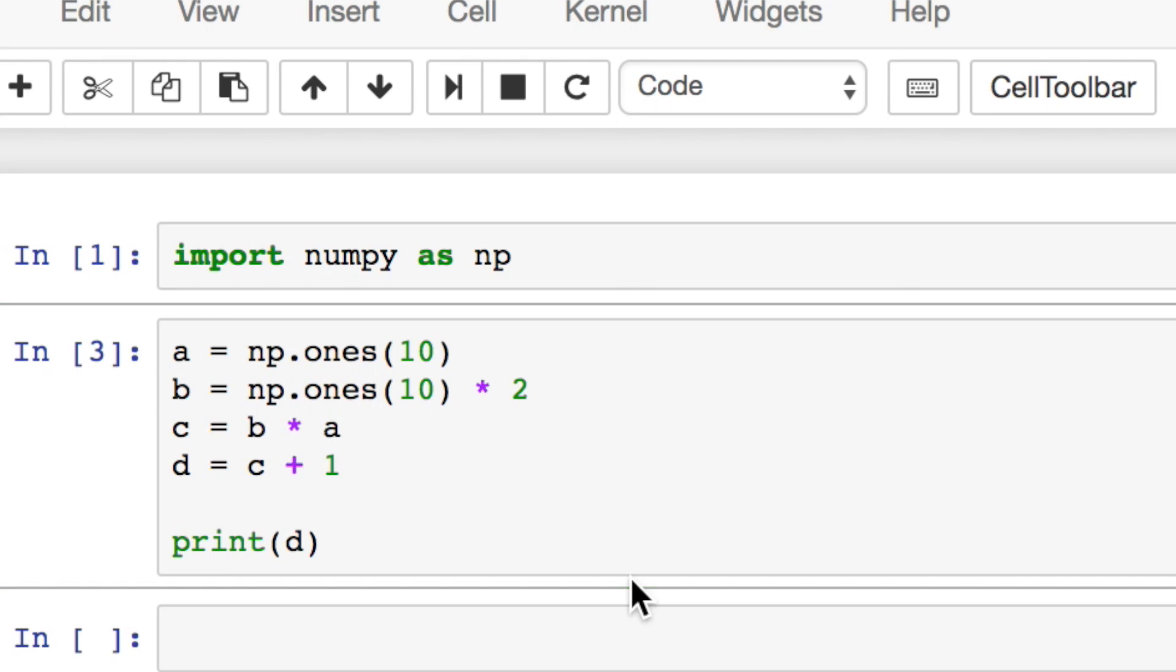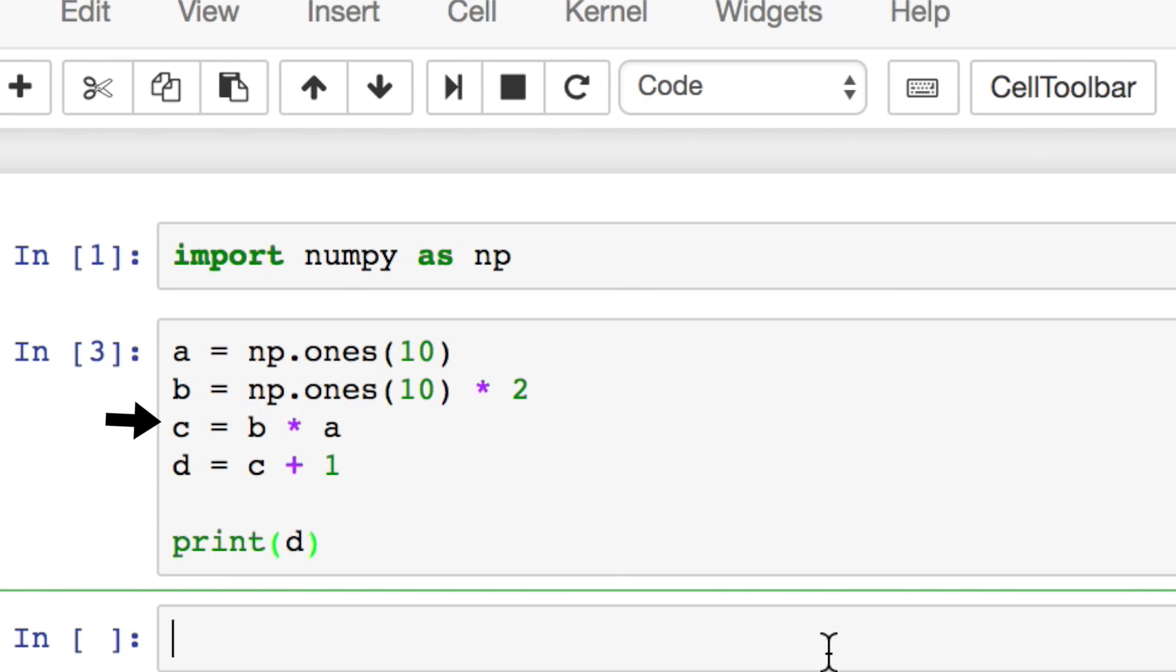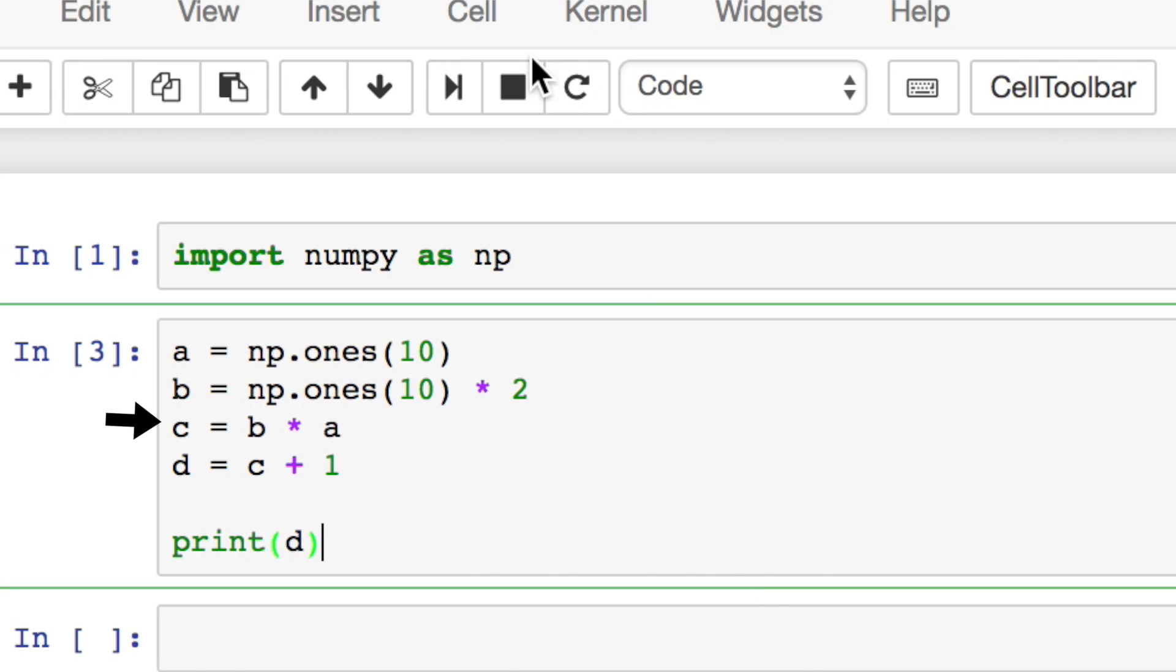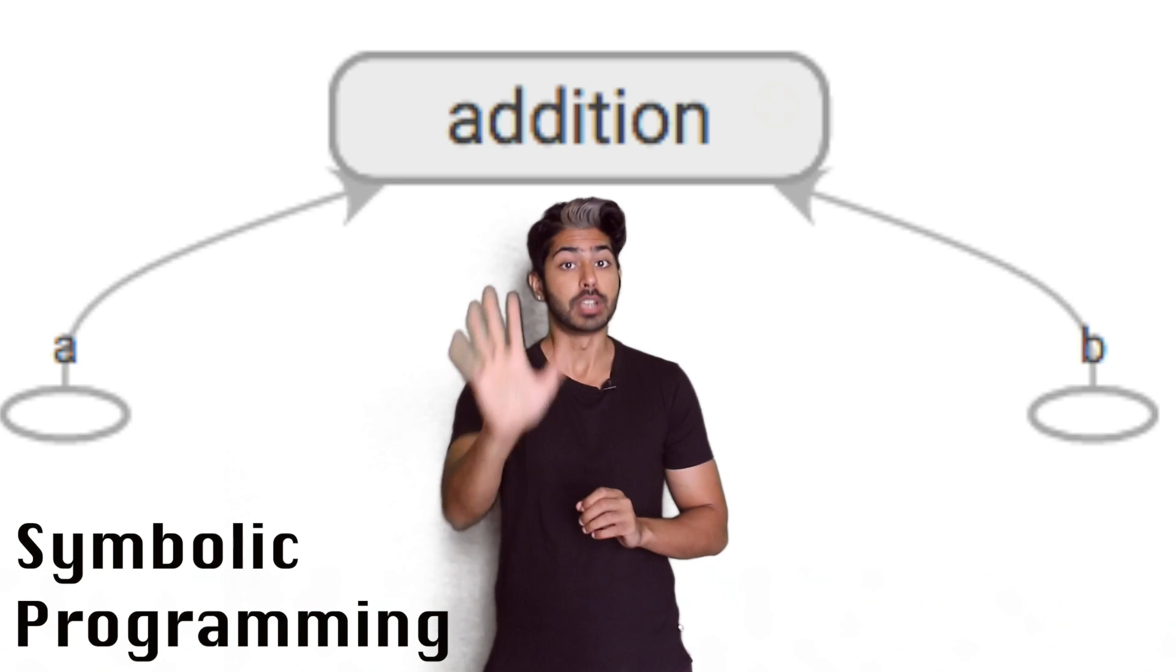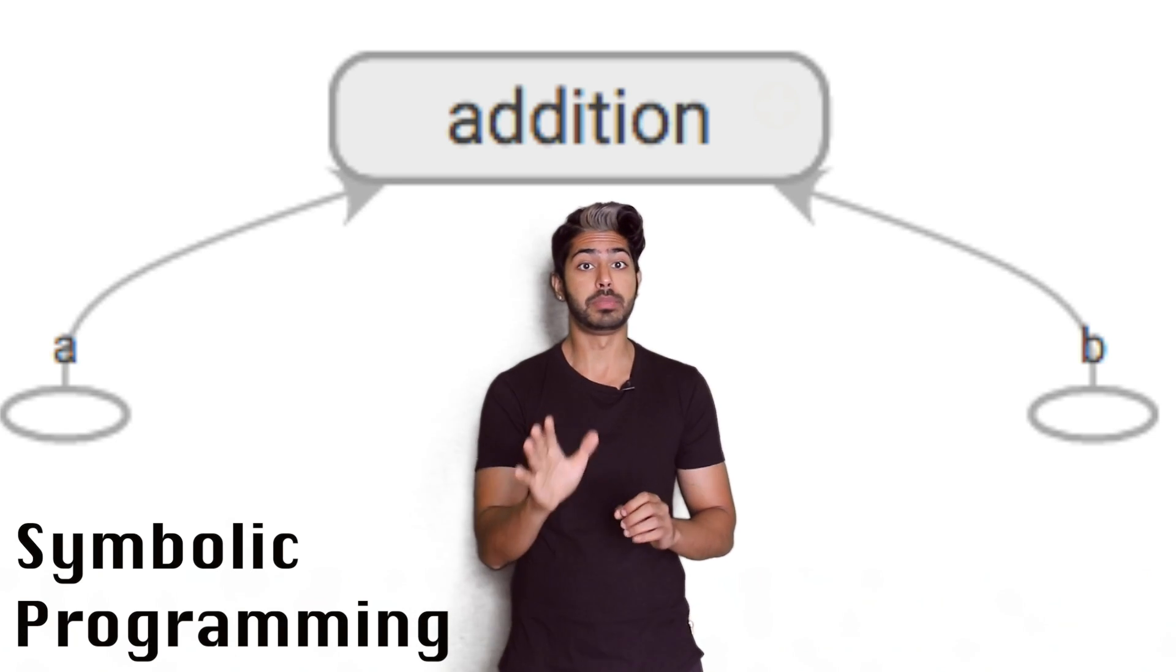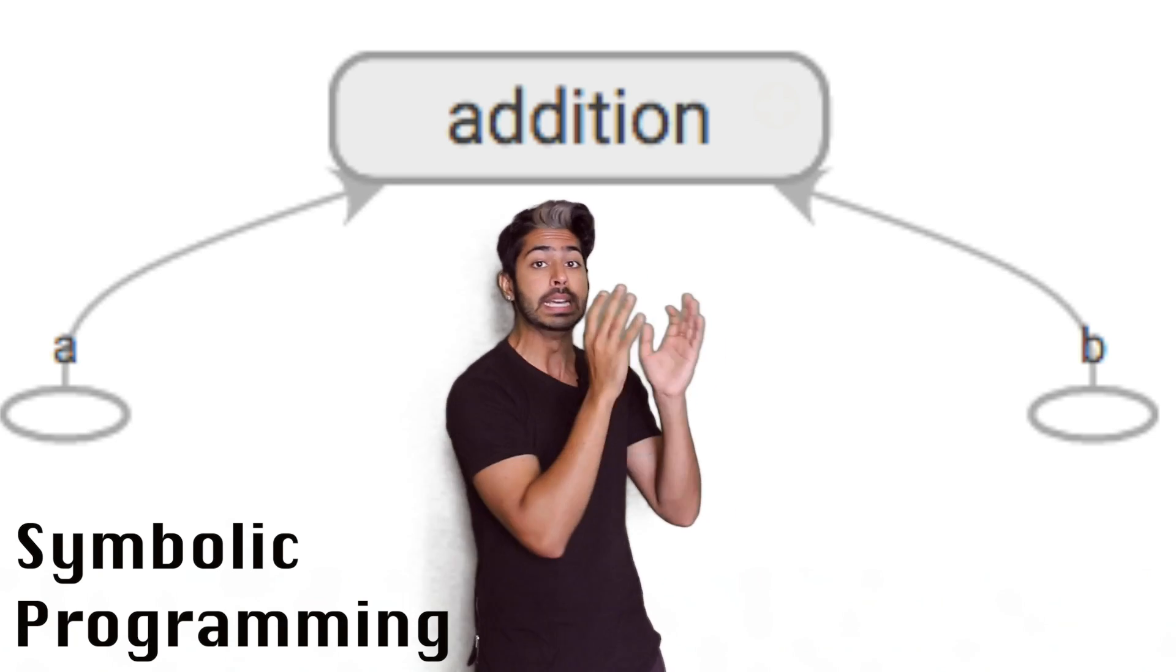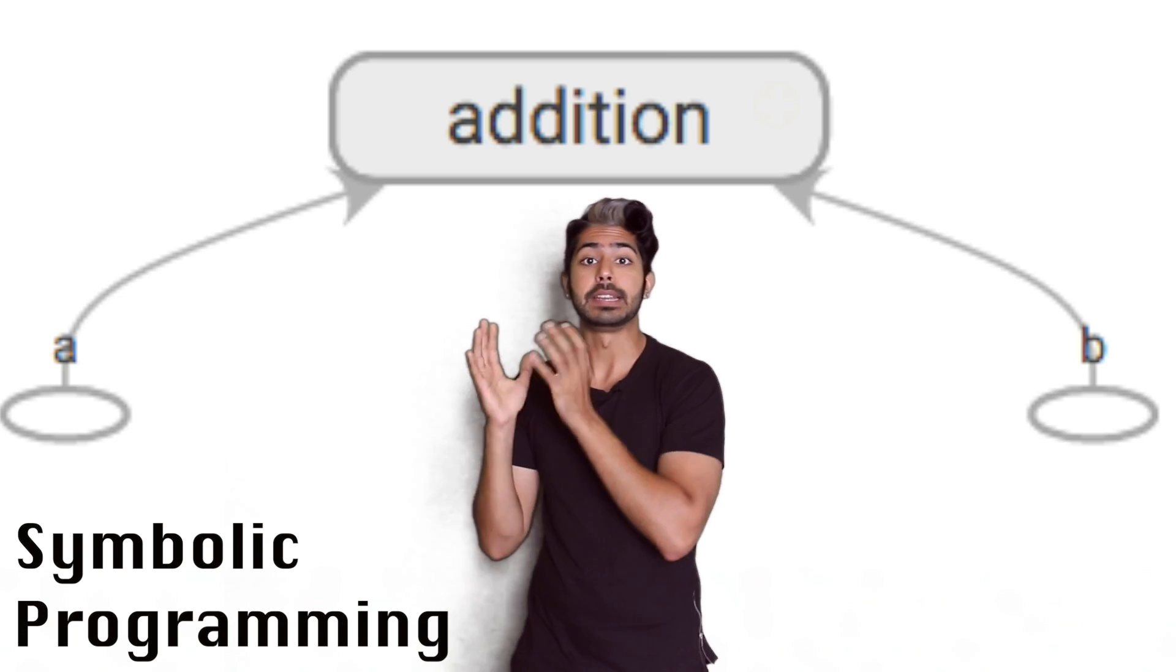In this NumPy example we write four lines of code to ultimately compute the value for d. When the program executes c equals b times a, it runs the actual computation then and there just like you told it to. In contrast, in a symbolic program there is a clear separation between defining the computation graph and compiling it.